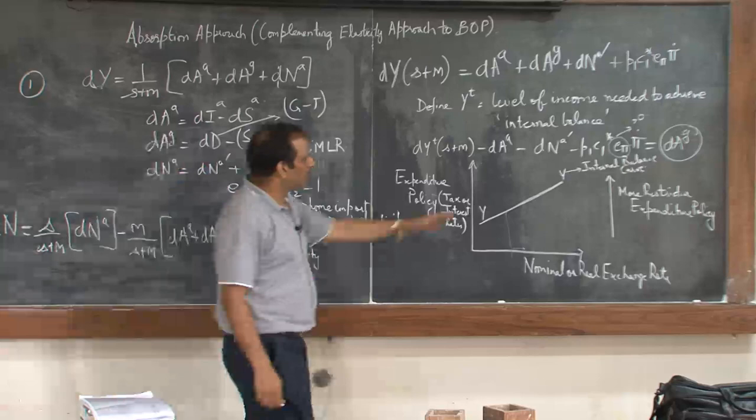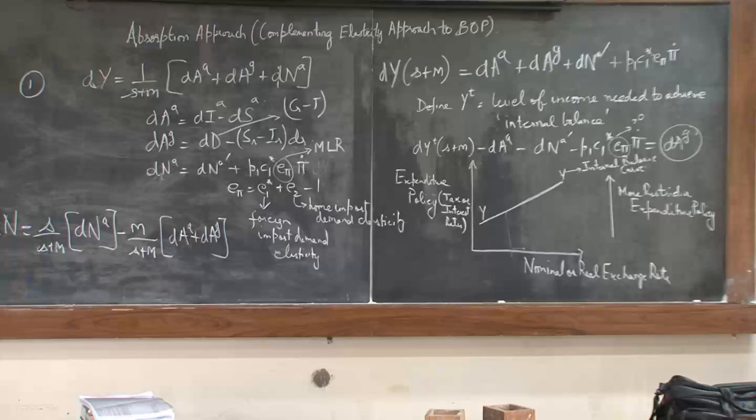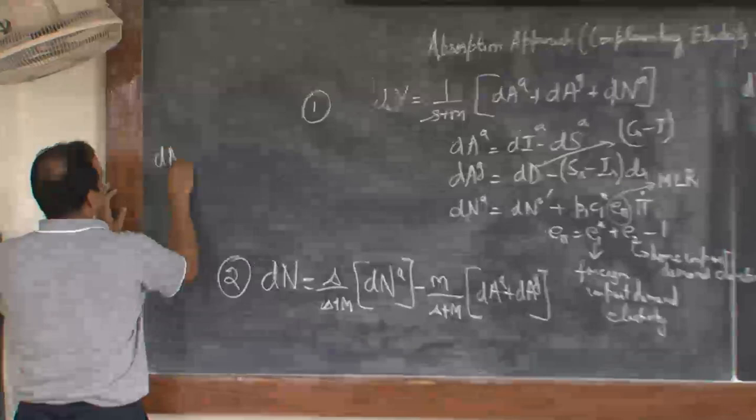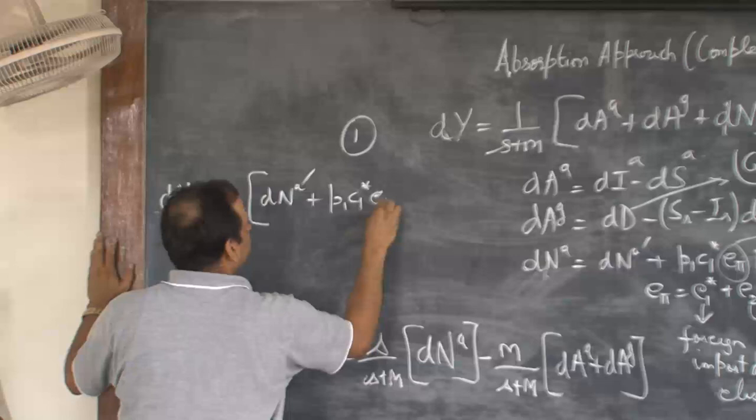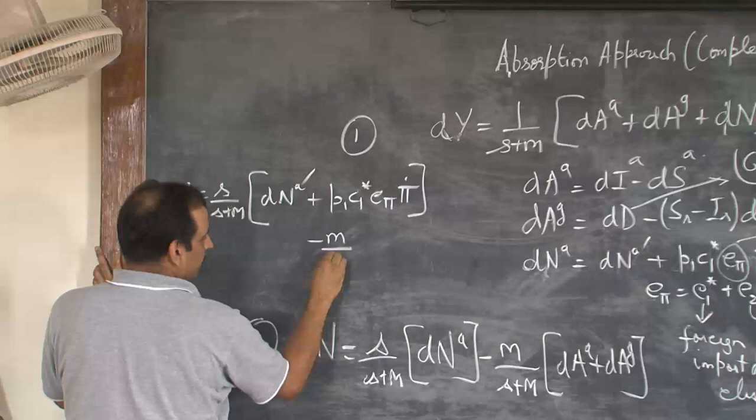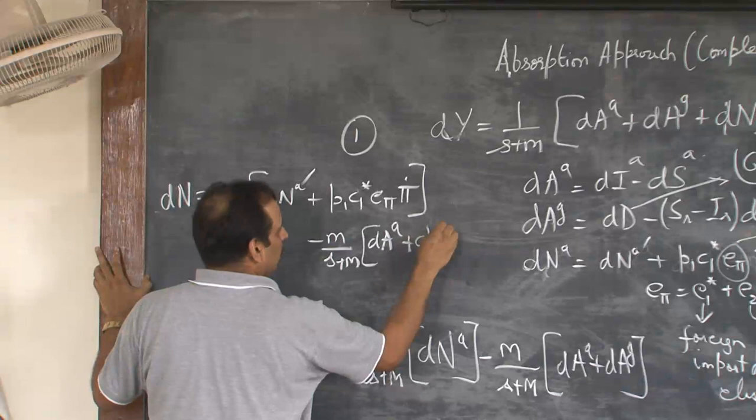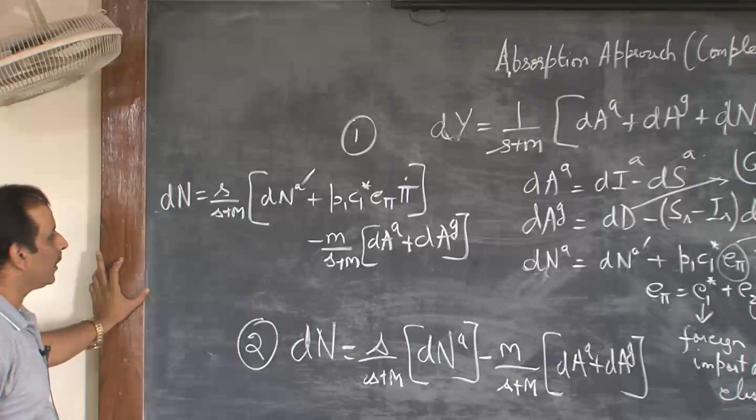Now let us get the external balance curve. How do you get the external balance curve from the second equation? You work on this: dN equals (s + m) times the autonomous component plus the induced component and then the expenditures. Again, if you have to relate expenditure policy with nominal or real exchange rates, you derive the external balance equation.